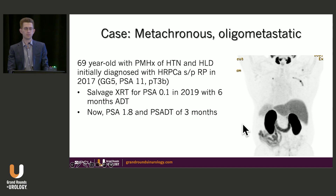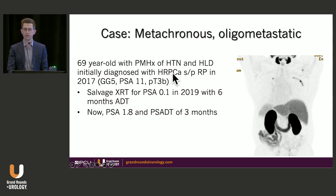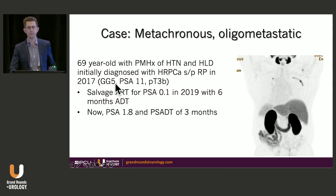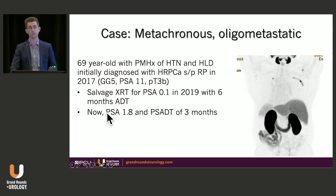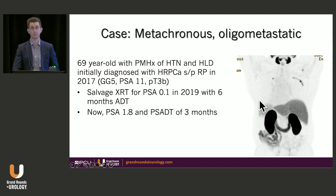I'm going to go through two cases to highlight different studies and how I approach oligometastatic PSMA PET positive prostate cancer. The first is a 69-year-old, relatively healthy with hypertension and hyperlipidemia, initially diagnosed with high-risk disease who had a radical prostatectomy in 2017. He had grade group 5 disease with seminal vesicle invasion, got salvage radiation two years later when his PSA was 0.1, and six months of ADT. When he came to us, his PSA was 1.8 with a three-month doubling time. PSMA PET CT showed a right fourth rib lesion and a right scapula lesion. We biopsied the scapula lesion and confirmed metastatic disease.